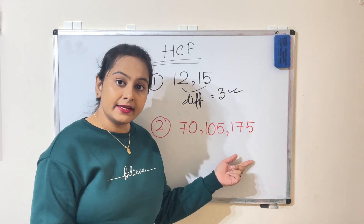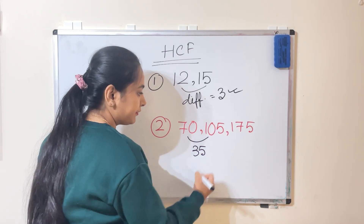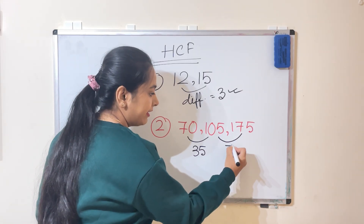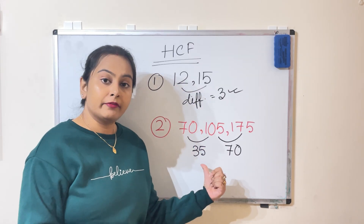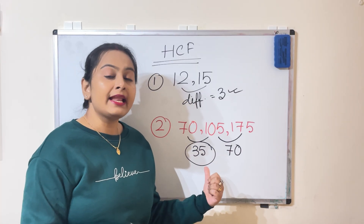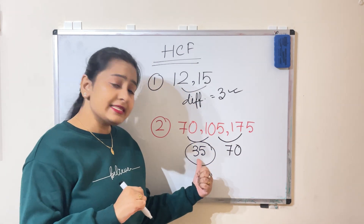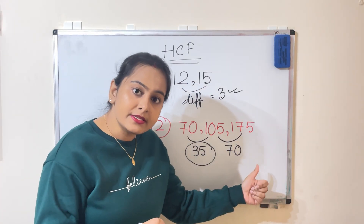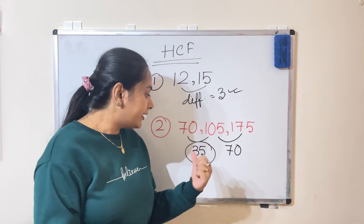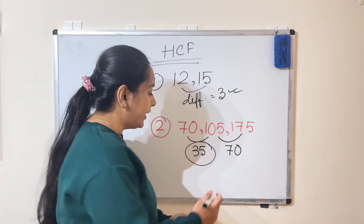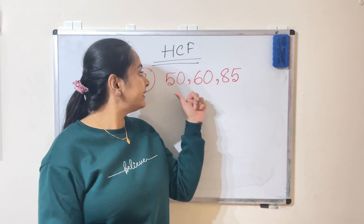In our second example, three numbers are given. Find the differences: the difference between 70 and 105 is 35, and between 105 and 175 is 70. When there are two differences, always choose the smaller one — so 35 is the smaller one. Check that 35 is a factor of all three numbers: 35 is a factor of 70, of 105, and of 175. So the HCF is 35.